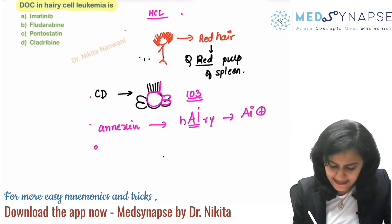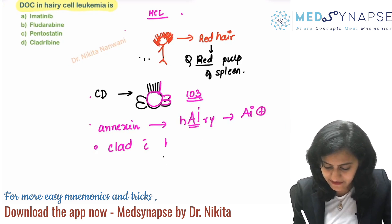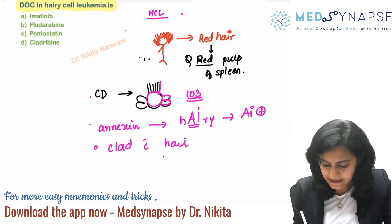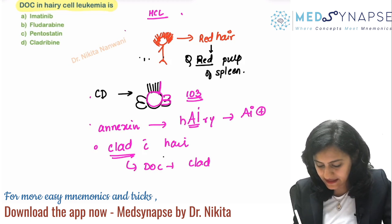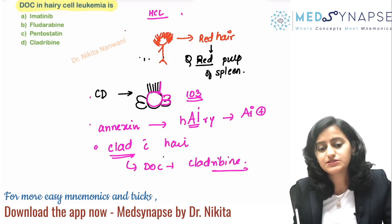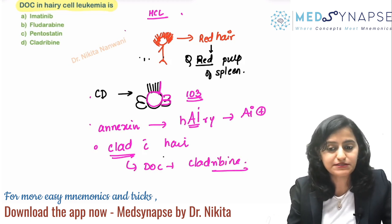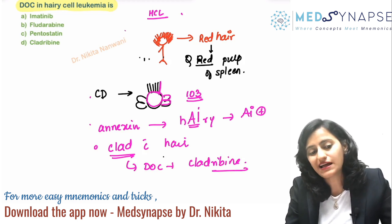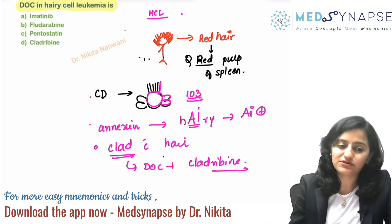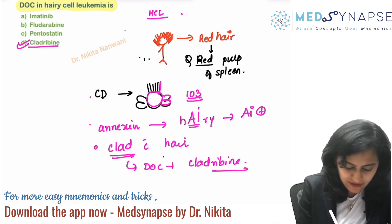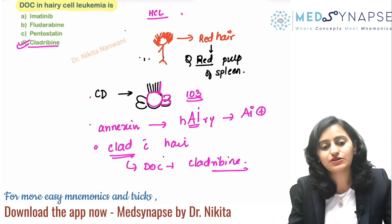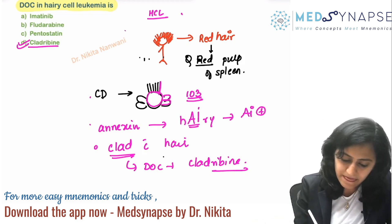Why did I say this person is clad with hair? Just to remember the drug of choice for hairy cell leukemia — that is cladribine. So the purine analogs like cladribine are used. If not cladribine, then pentostatin can also be used. Remember, cladribine is the drug of choice in hairy cell leukemia.